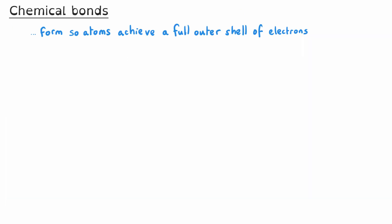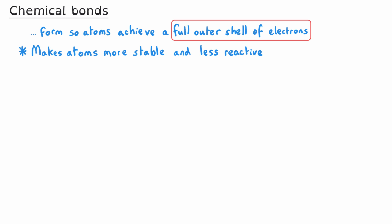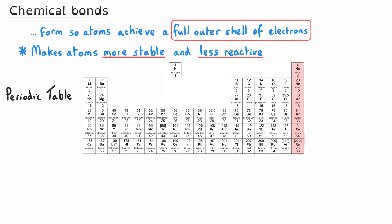Chemical bonds are formed so atoms can achieve a full outer shell of electrons. This makes atoms more stable and therefore less reactive. In the periodic table, the elements of group zero are called the noble gases.